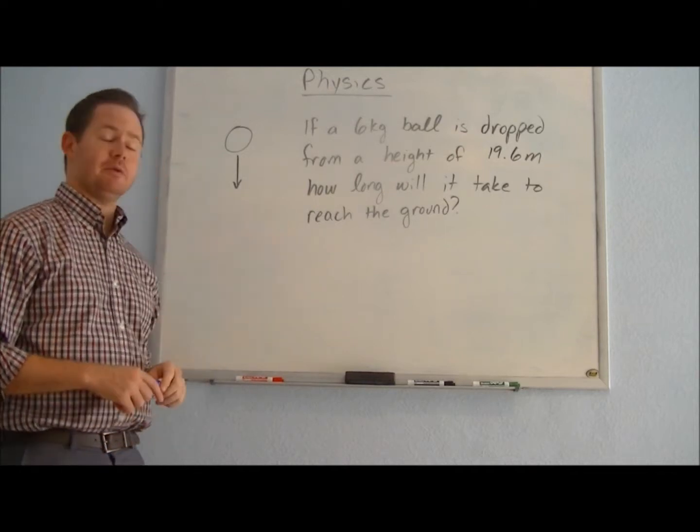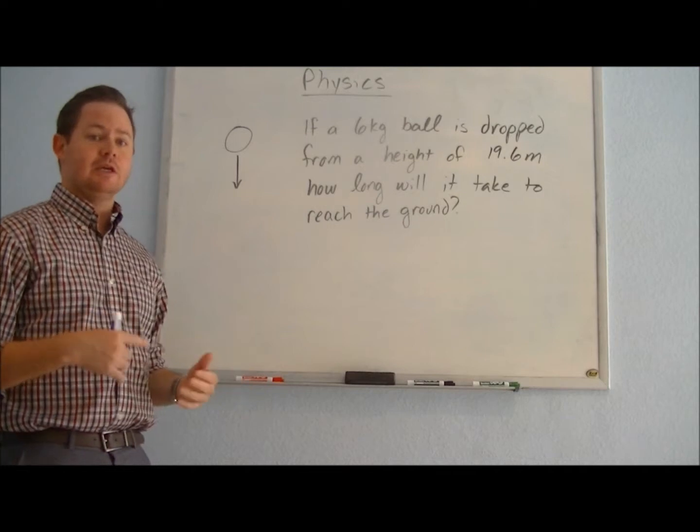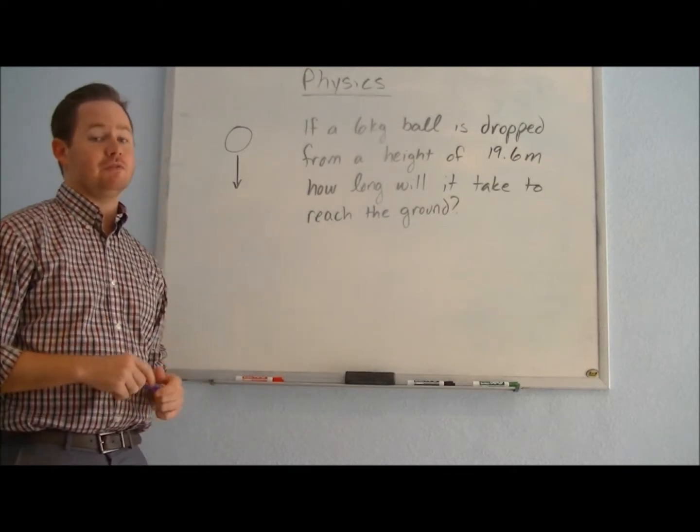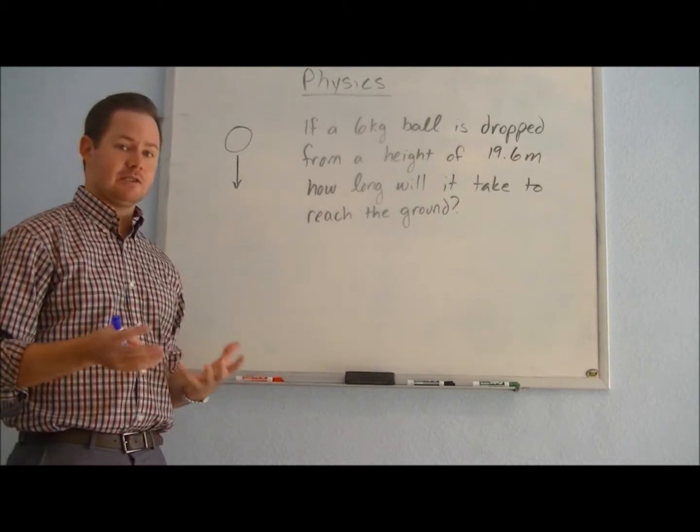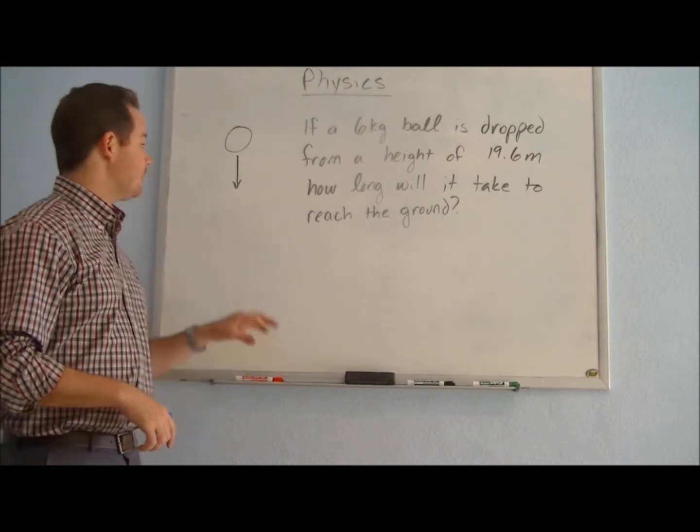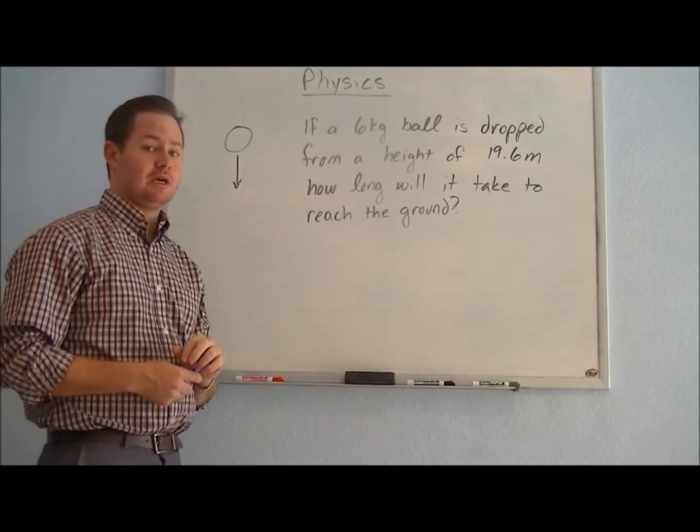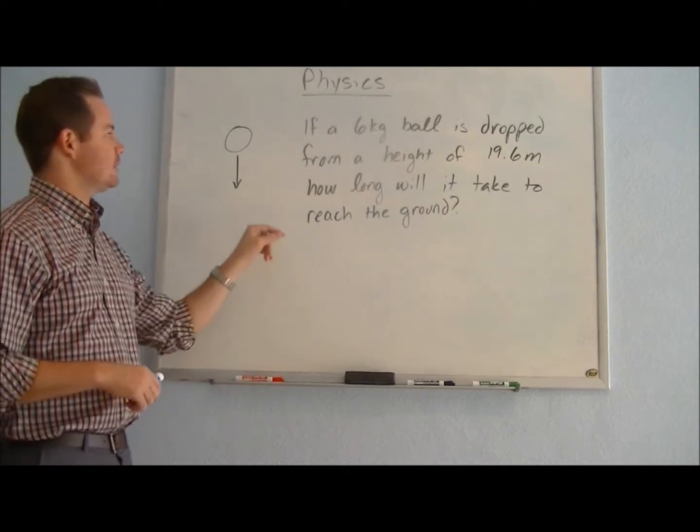So for right now in this problem we're going to look at this without air resistance present. Now a little bit later on in physics, and in a few of our later videos, we'll take a look at what to do with air resistance and how to take that into account. But for right now we're going to ignore that factor and we're just going to assume that the ball is falling through the air, but with no air resistance opposing its motion. So let's take a look at this question.